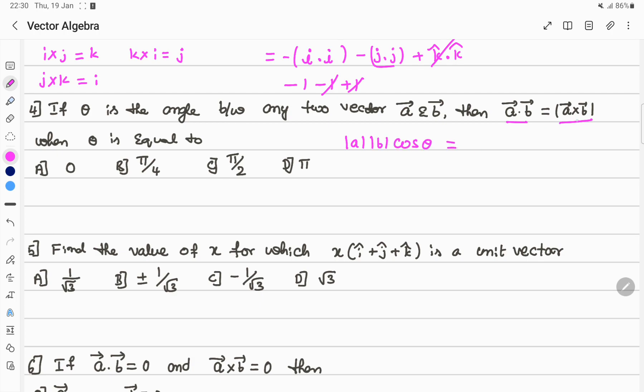This equals magnitude of A times magnitude of B times sin theta. The magnitude of unit vector equals 1, so these values cancel, giving cos theta equals sin theta. When sin theta equals cos theta, the angle equals pi by 4.